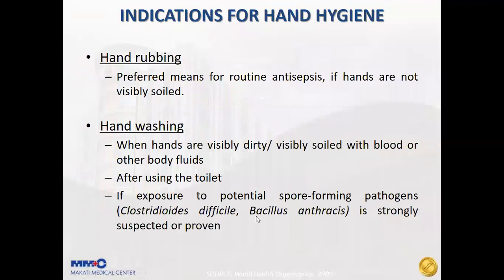When do we perform hand rubbing or hand washing? Hand rubbing is the preferred means for routine antisepsis. If your hands are not visibly soiled, you can do hand rubbing. Hand washing is performed when hands are visibly dirty or soiled with blood or body fluids, after using the toilet, or if handling or exposed to potentially spore-forming pathogens like Clostridioides difficile or Bacillus anthracis — in which case hand washing is strongly recommended.